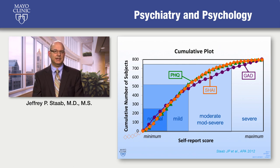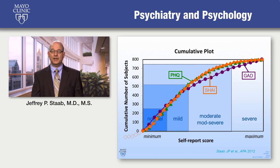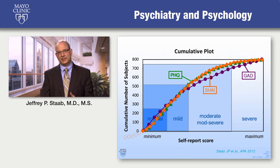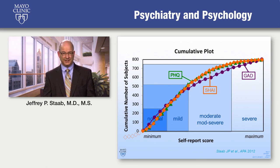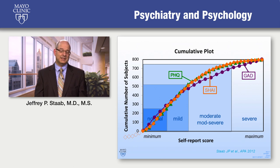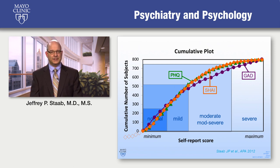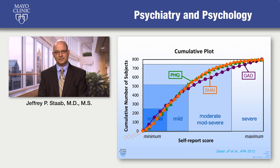One thing the plot doesn't show is that illness anxiety can wax and wane — it can remit and recur as other anxiety and depressive disorders do. It's not that somebody is born a hypochondriac and lives their life that way, but rather there's a range of illness anxiety that waxes and wanes over a lifetime, often in conjunction with the appearance of physical symptoms.